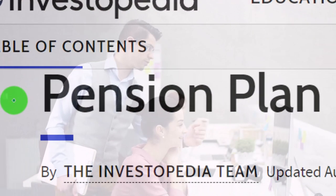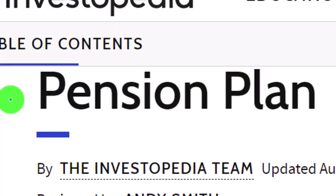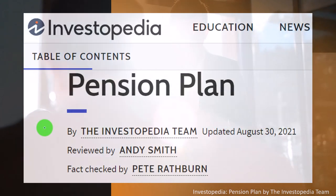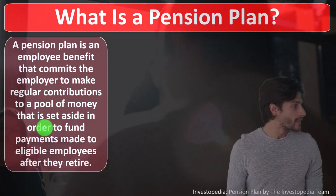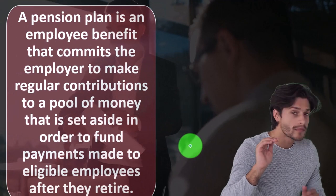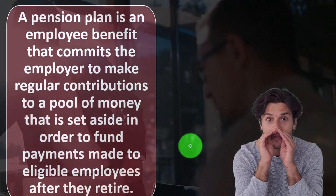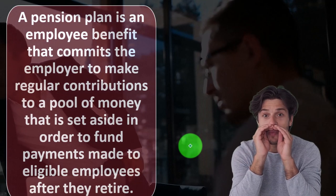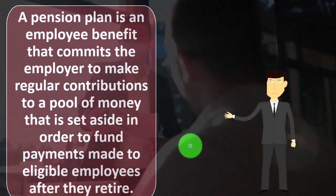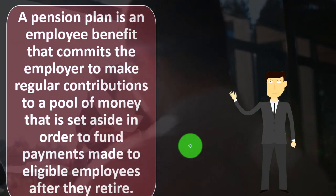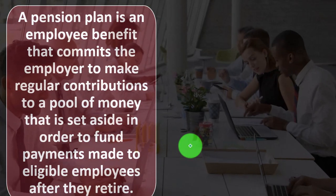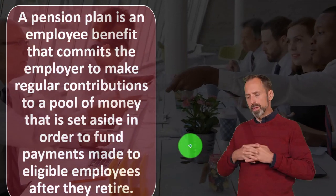We're focusing on the pension plan component. According to Investopedia, a pension plan is an employee benefit that commits the employer to make regular contributions to a pool of money set aside to fund payments made to eligible employees after they retire. Retirement planning is often tied to your employer, which has pros and cons — similar to health insurance.